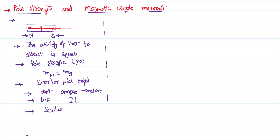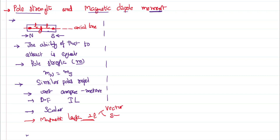The line passing through both poles and the center of the magnet is called the axial line. The distance from the center to each pole is treated as l, so the magnetic length is 2l. Importantly, this magnetic length is not a scalar — it is a vector, and its direction is from the south pole to the north pole of the magnet.